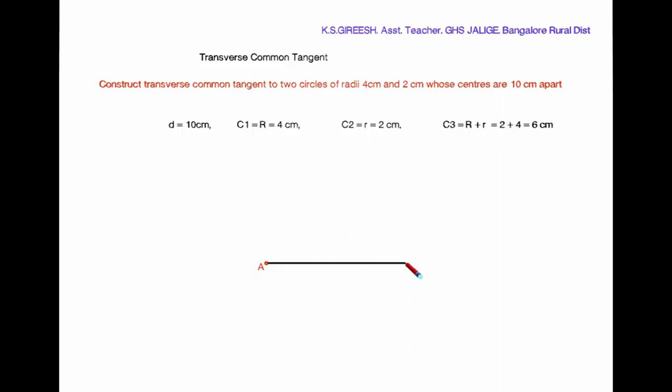With radius equals 4 cm, draw a circle C1 with A as center. And again, with radius 2 cm, draw C2 circle with B as center. By adding radius of both circles, that is C1 plus C2, we get 6 cm. With 6 cm as radius, draw C3 circle with A as center.